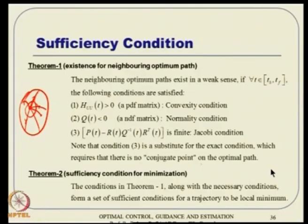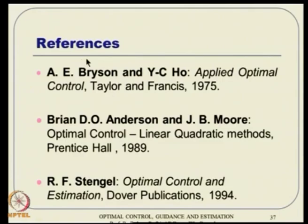For more details on strong sense sufficiency and deeper analysis, one can refer to Bryson and Ho and other mathematical optimal control books. To summarize this lecture: LQR and Kalman filter together give LQG; LQG has a robustness issue addressed by LTR; neighboring optimal control finds nearby optimal solutions efficiently; and sufficiency conditions require convexity, normality, and the Jacobi condition. Thank you.